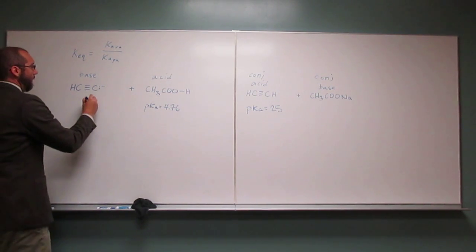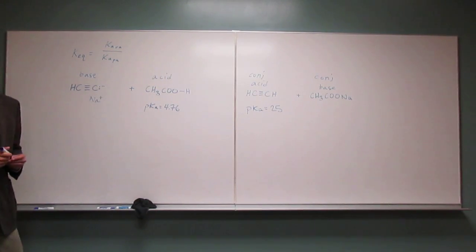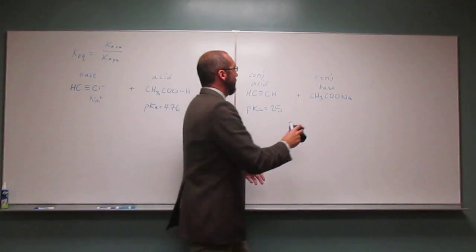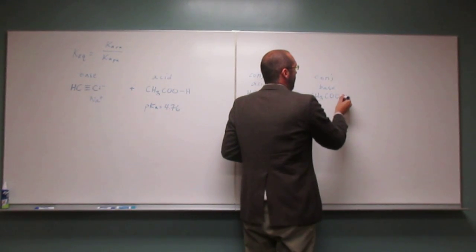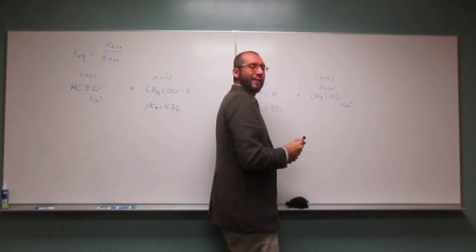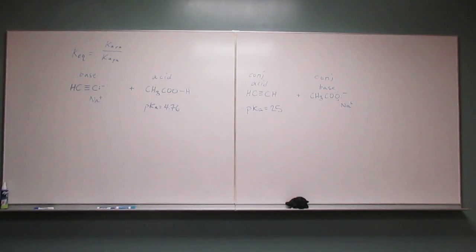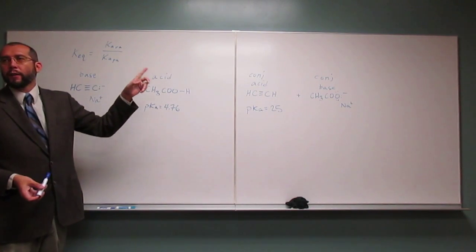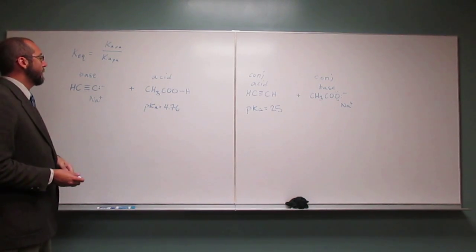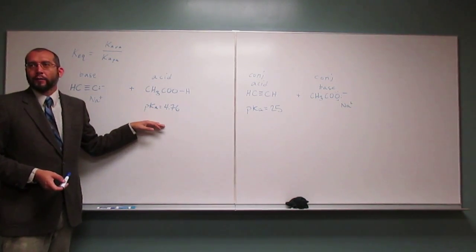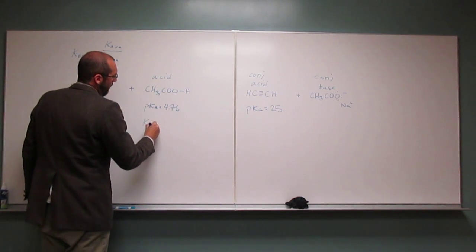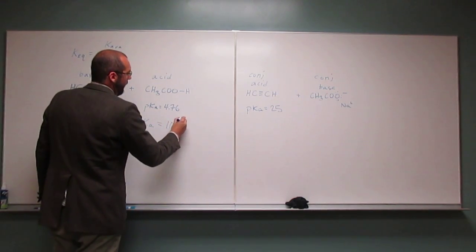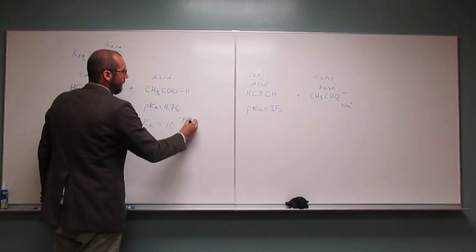And then if you're really worried about it, you put your Na+ next to it over there. Does that make sense? So you might say, well I figured all that out, what's the acid, the reactant acid and product acid, but I have the pKa but not the Ka. So how do I get the Ka from the pKa? Well remember, the Ka is 10 to the negative pKa.